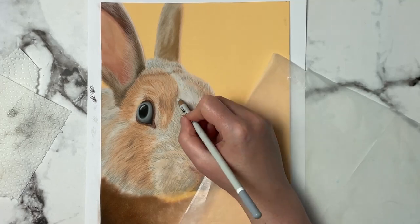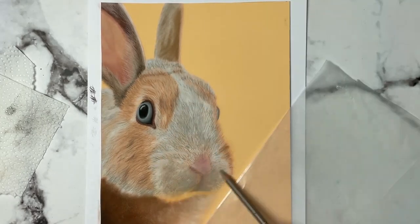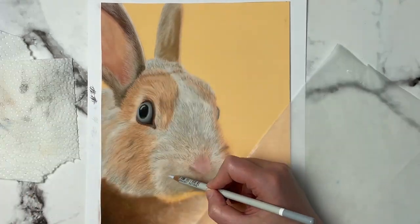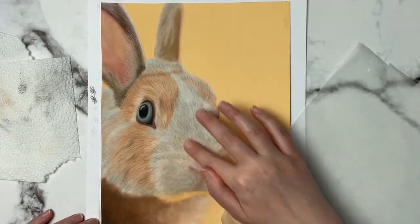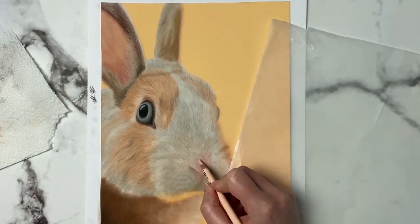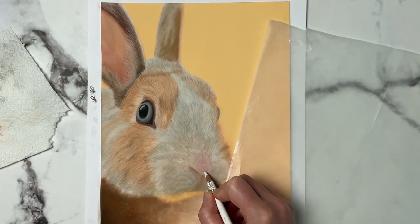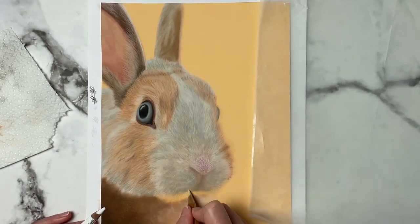And the whole time I'm putting the hair in I'm really looking at the direction of the hair. So I'm not just making random lines or random marks but I'm really looking at the curve of the hair and the direction. And that's going to help with the structure of the face, how the hair goes over it. It's going to help make it even more realistic looking.